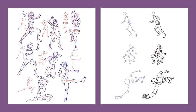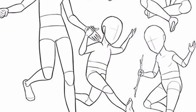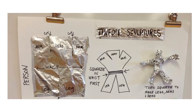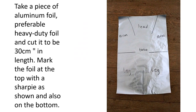Remember to add movement — it makes your figures interesting. Now that you understand the proportion of the human body, let's start with our 3D tin foil artwork. Step 1: Take a piece of aluminium foil, preferably heavy duty foil, and cut it to be 30 cm in length. Step 2: Mark the foil at the top with a sharpie or your black marker as shown, and also on the bottom — the head at the top, then the arms, torso right in the middle, and then legs.